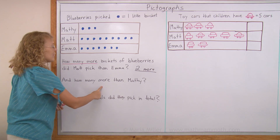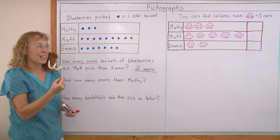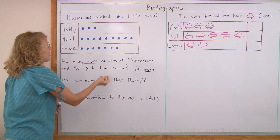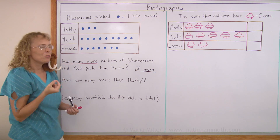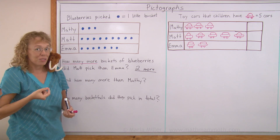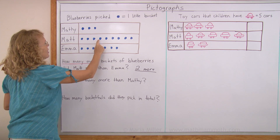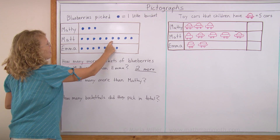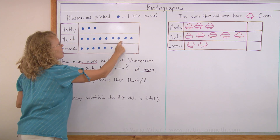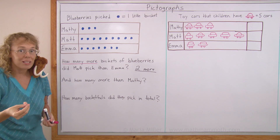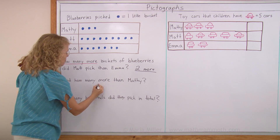How many more did Matt pick than Matthew? Matt and Matthew — can you see that? Can you count them? I can just count here the ones that Matt picked more than Matthew. It is six. Six more.